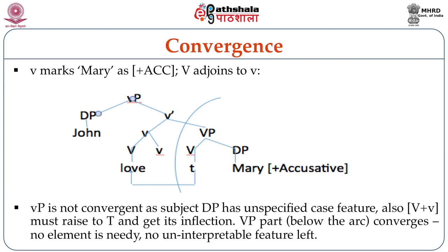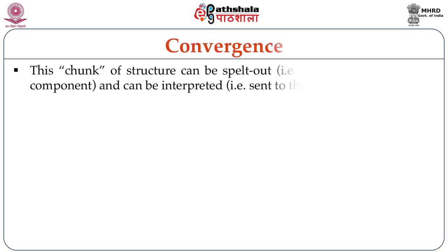Now, little vP is still not convergent because the subject DP has an unspecified case feature, and because the big V and little V verbal complex must raise to T to get its inflection. However, it can be seen that the big VP part — the part below the arc drawn on screen — is convergent, because it now has no element needy of feature checking and there is no uninterpretable feature left in it. Thus, this little vP is convergent for our theory.